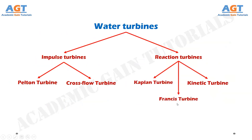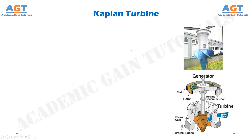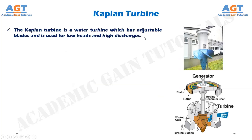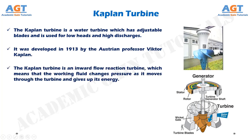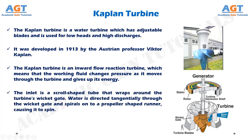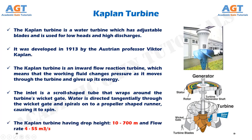The three types are: Kaplan turbine, Francis turbine, and kinetic turbine. The Kaplan turbine is a water turbine which has adjustable blades and is used for low heads and high discharges. It was developed in 1913 by the Austrian professor Viktor Kaplan. The Kaplan turbine is an inward flow reaction turbine, which means the working fluid changes pressure as it moves through the turbine and gives up its energy. The inlet is a scroll-shaped tube that wraps around the turbine's wicket gate. Water is directed tangentially through the wicket gate and spirals onto a propeller-shaped runner, causing it to spin. The Kaplan turbine has a flow rate of 4 to 55 cubic meters per second.